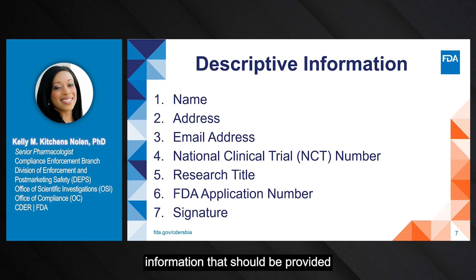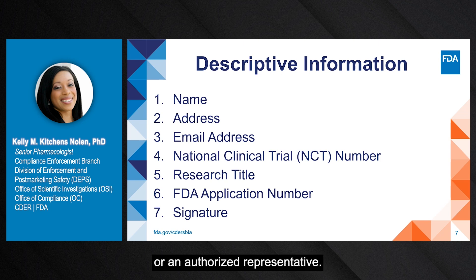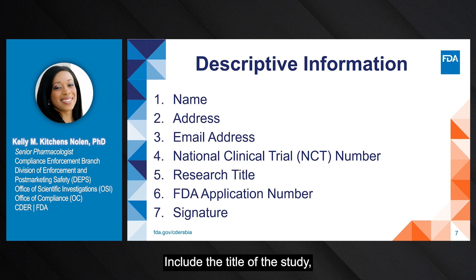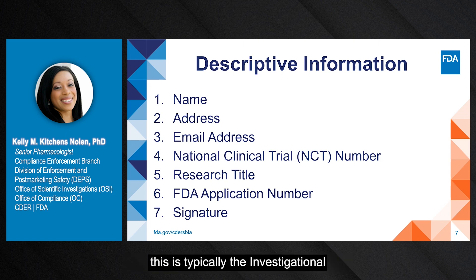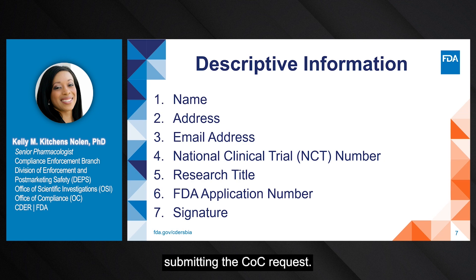This slide includes the descriptive information that should be provided with the COC request to facilitate review and issuance of a certificate. Include the name, address, and email address of the sponsor or sponsor investigator or an authorized representative. Include the National Clinical Trial or NCT number for clinicaltrials.gov, if applicable — this number should be provided upon registration on clinicaltrials.gov. Include the title of the study, the FDA application number as applicable — for CDER-regulated studies, this is typically the Investigational New Drug Application or IND number, unless there is an IND exemption. Finally, provide the signature of the sponsor, sponsor investigator, or authorized representative submitting the COC request.